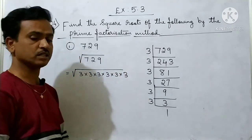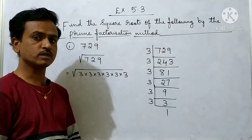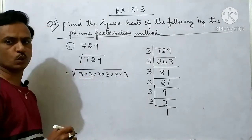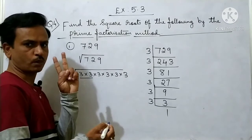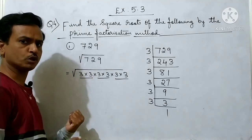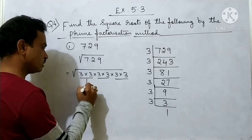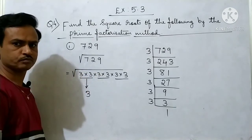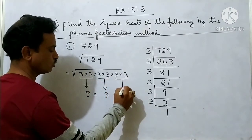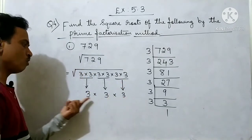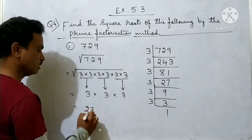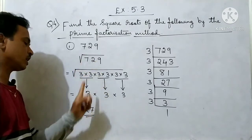Now we are going to find the square root of 729. Square root means we take 2 same numbers and make 1 group — square means 2. So here: 1 group, next 1 group, next 1 group. From each group you take only 1 digit outside: 3, then 3, then 3. Multiply all: 3 threes are 9, 9 threes are 27. So the square root of 729 is 27.